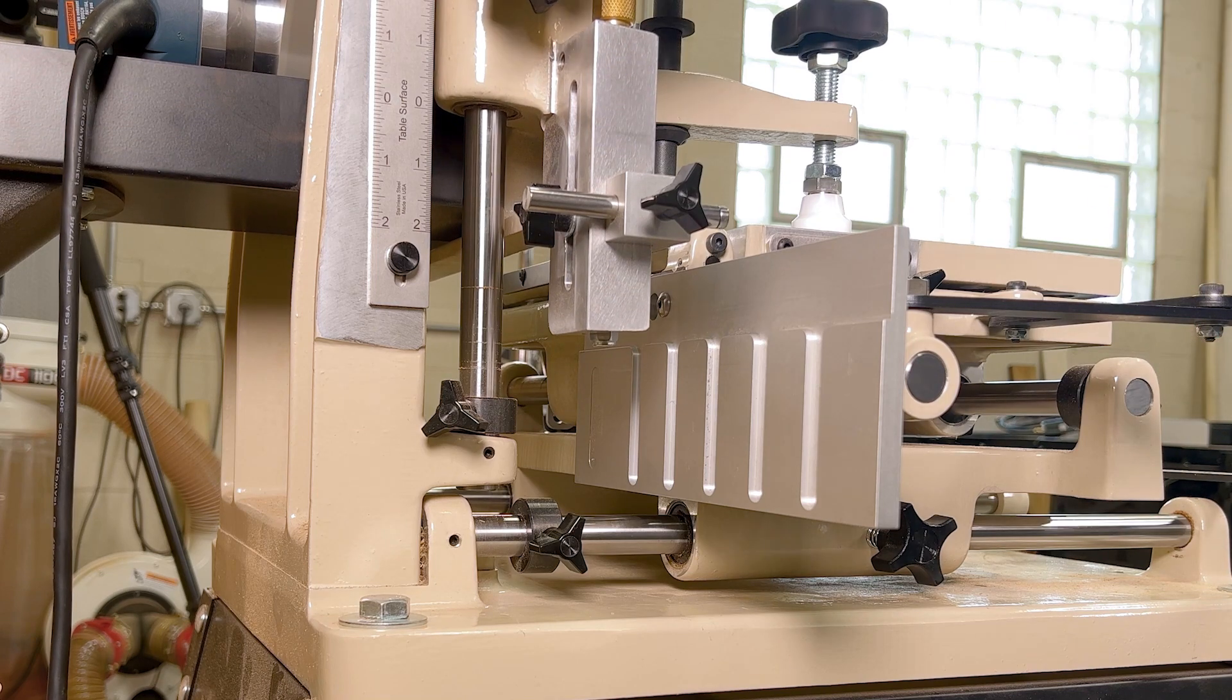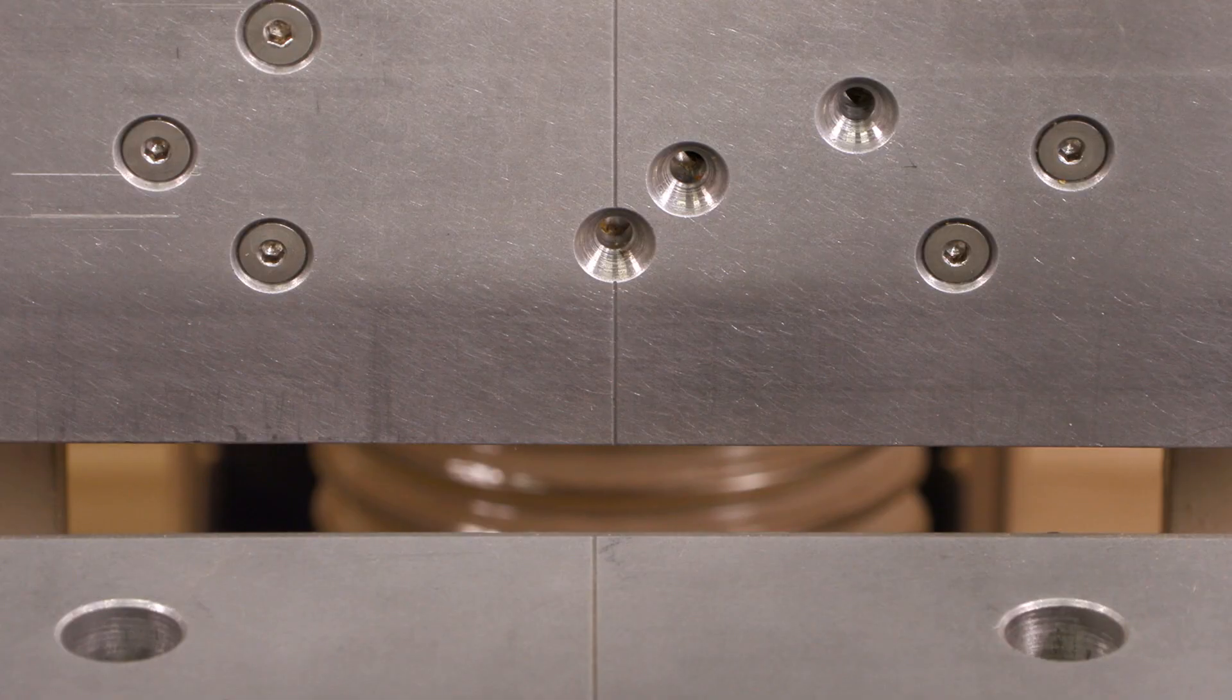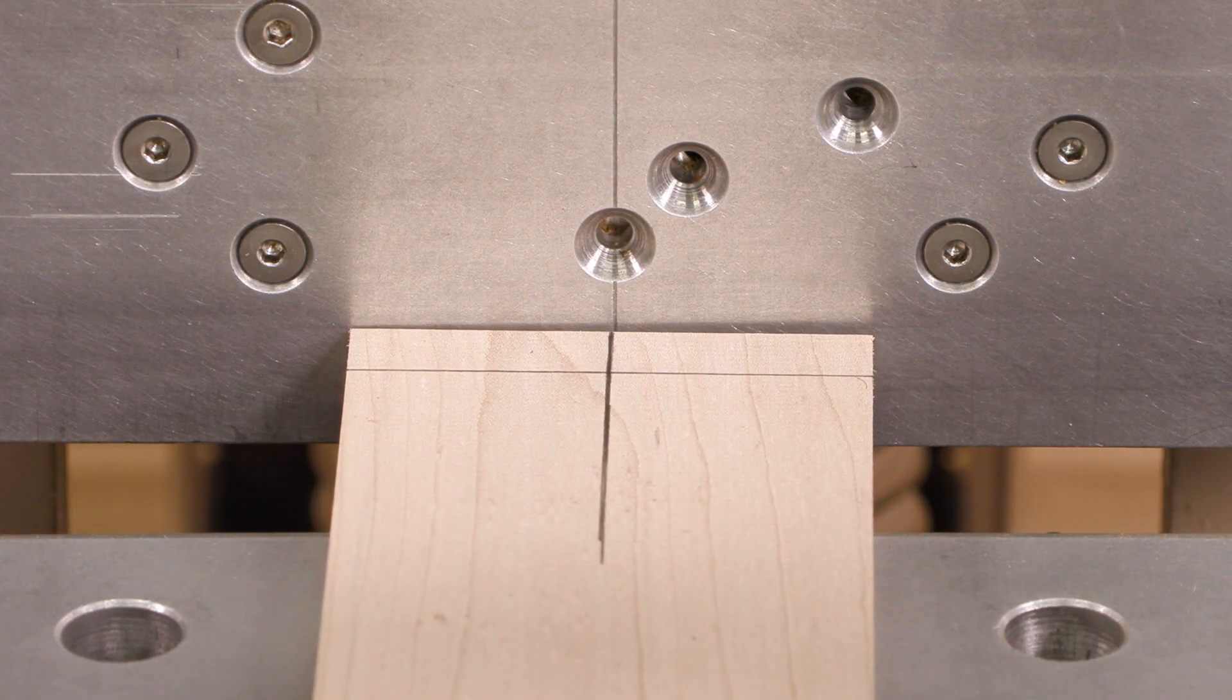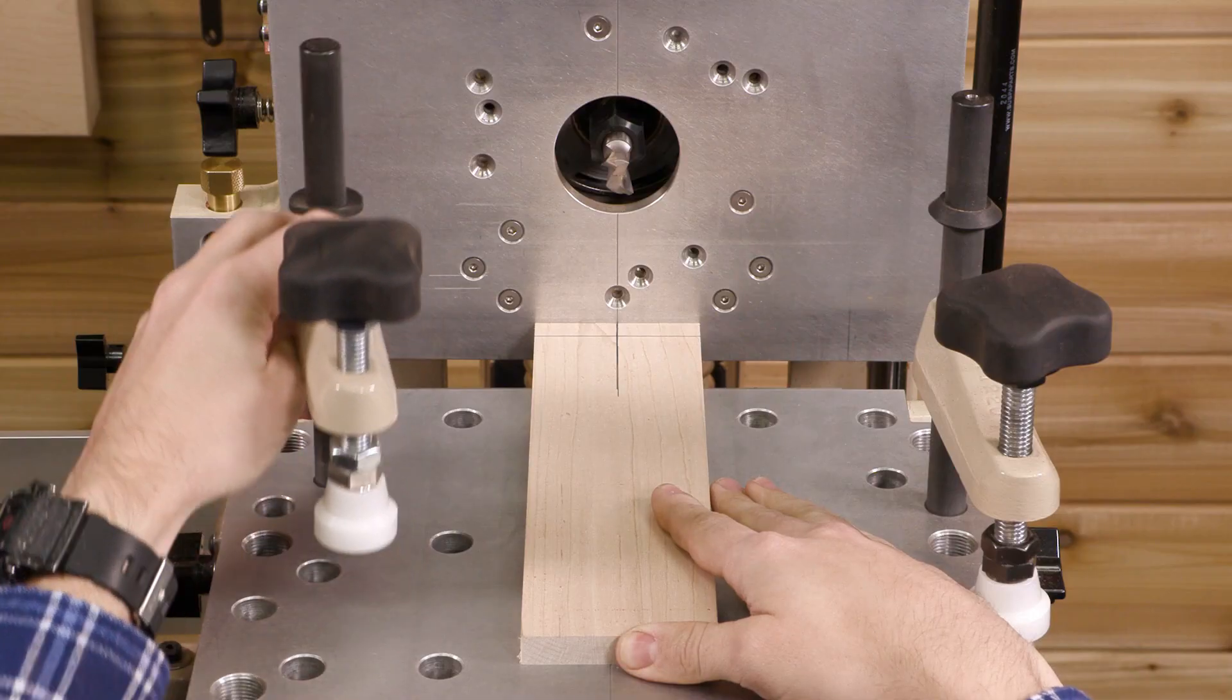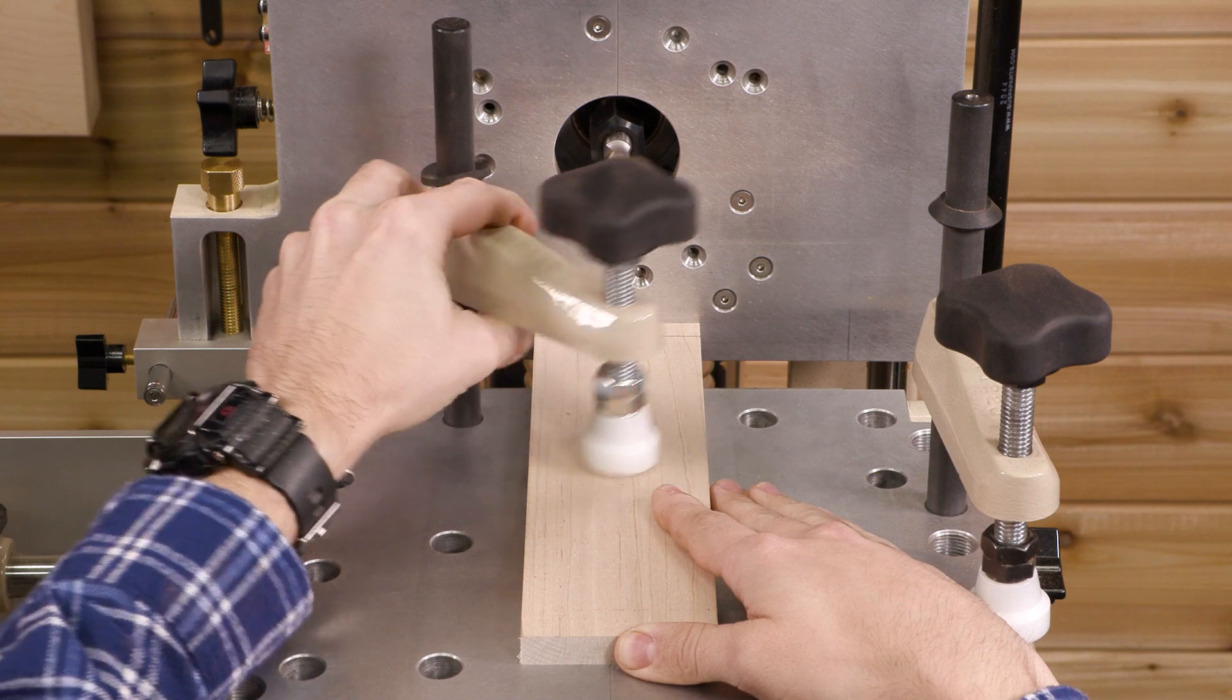Raise the vertical table slightly and align the center mark on your workpiece with the center mark on the vertical table. With everything perfectly aligned, clamp the workpiece down.